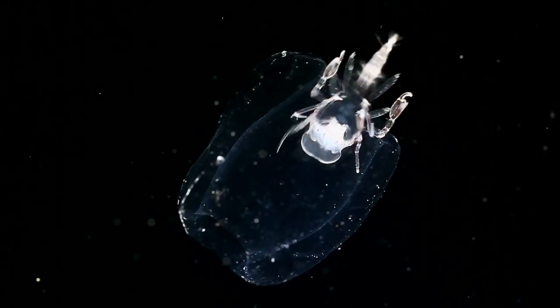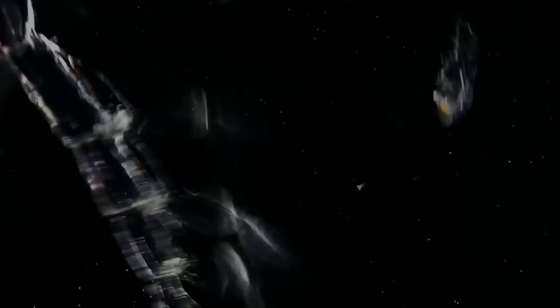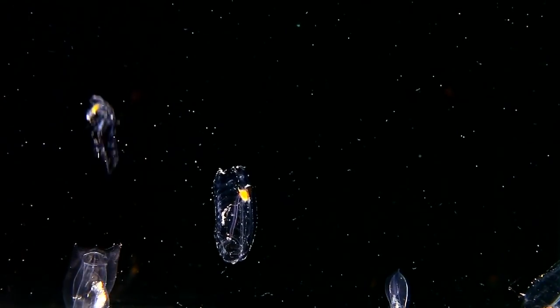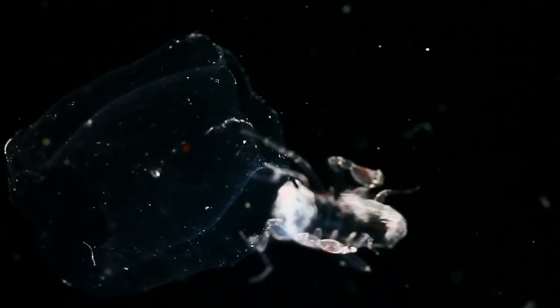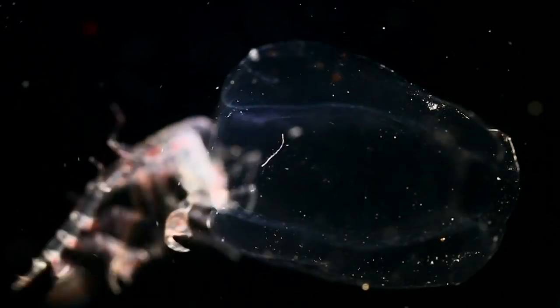It clings to its house with clawed arms, swimming and feeding with bristle-covered posterior legs. As it grows, the phronoma builds bigger and bigger barrels.